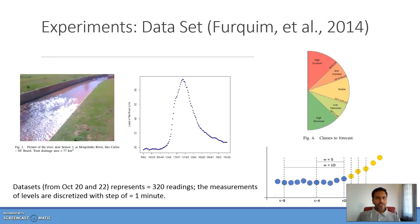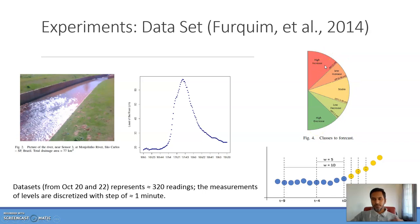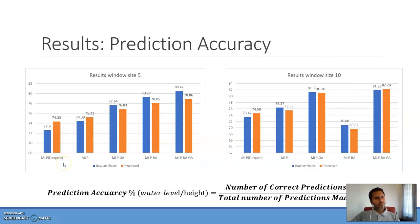We ran experiments to evaluate all four approaches using a dataset from Ferquing, which measured the level of water in a river at one-minute intervals over two days, representing 320 readings. It classifies water levels into five classes, where high increases indicate the possibility of a flash flood. We also compared our results with Ferquing's approach, which uses a traditional MLP and different methods like SVM and linear regression.